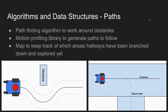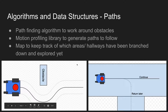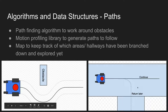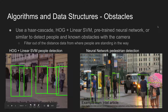For the algorithms and data structures, there will be a pathfinding algorithm to work around obstacles as they're detected, and I'll use a motion profiling library to generate paths for each wheel to accurately avoid obstacles. There will also be a map to track which areas in the hallway have been explored already so the robot can return to them later to build the full map. For detecting obstacles, I plan to use either a Haar cascade, HOG plus linear SVM, or a neural network to detect people and known obstacles with the camera.